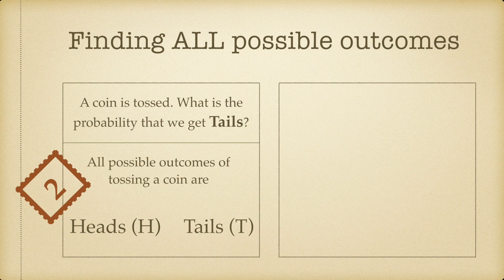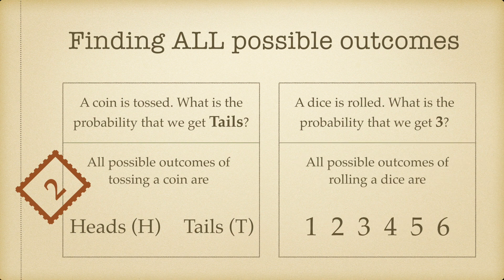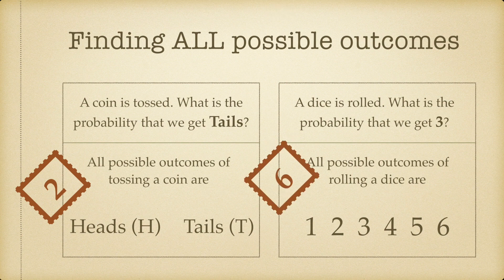Let's take a look at our second example. A dice is rolled. What is the probability that we get a three on the top? What are the possible outcomes of rolling a dice? They are the numbers one, two, three, four, five, or six. Any of these numbers can show up on the top. So we say that there are a total of six possible outcomes.